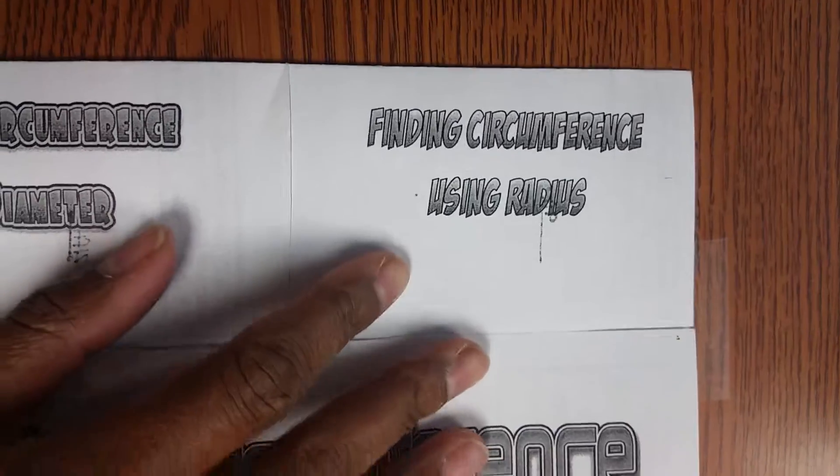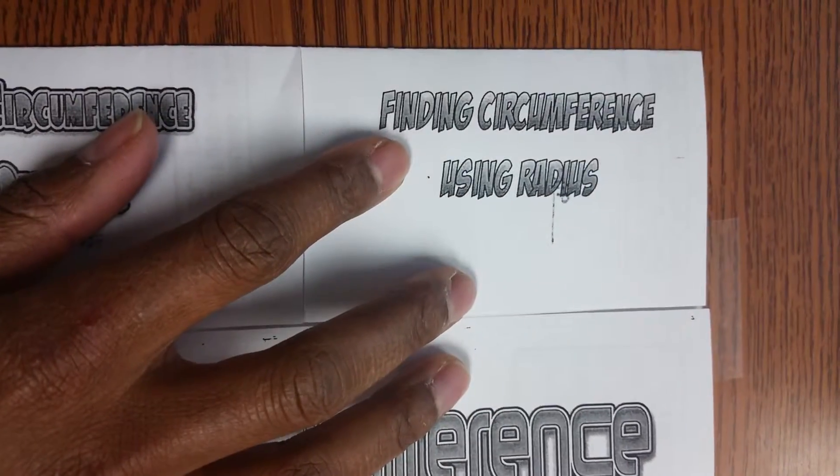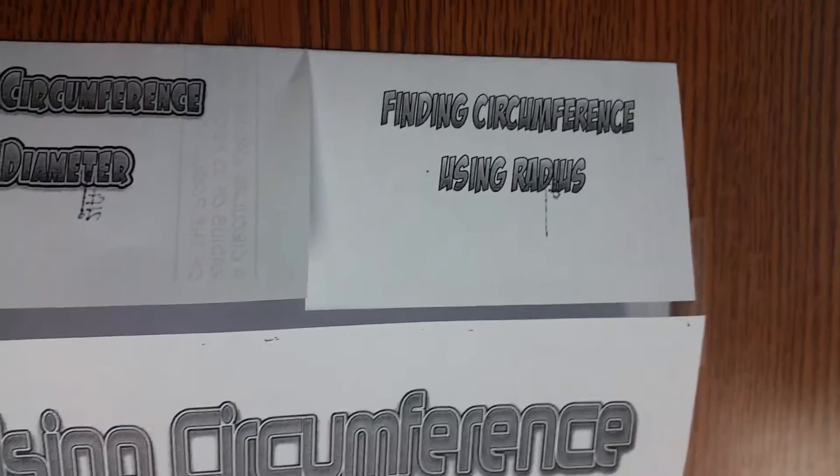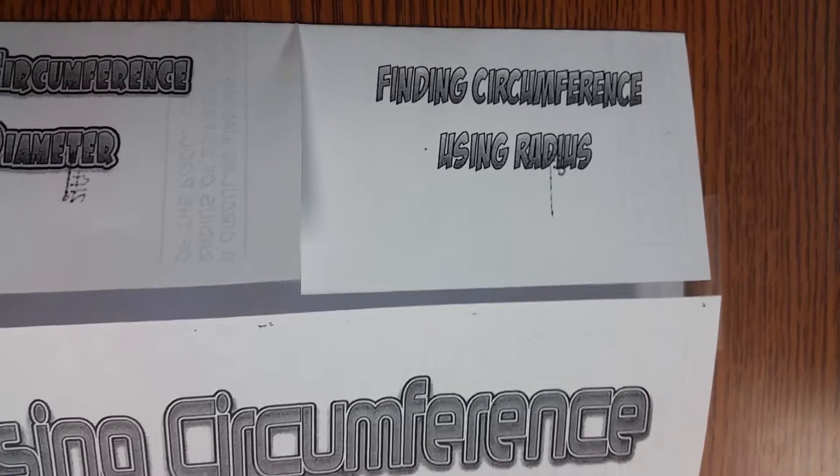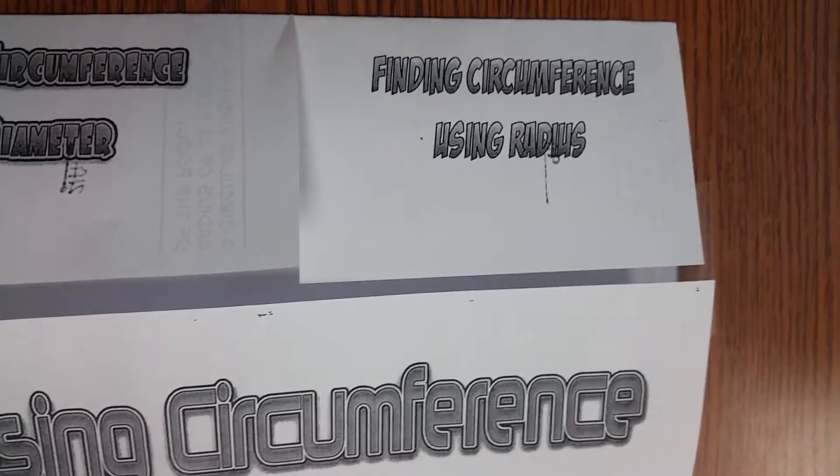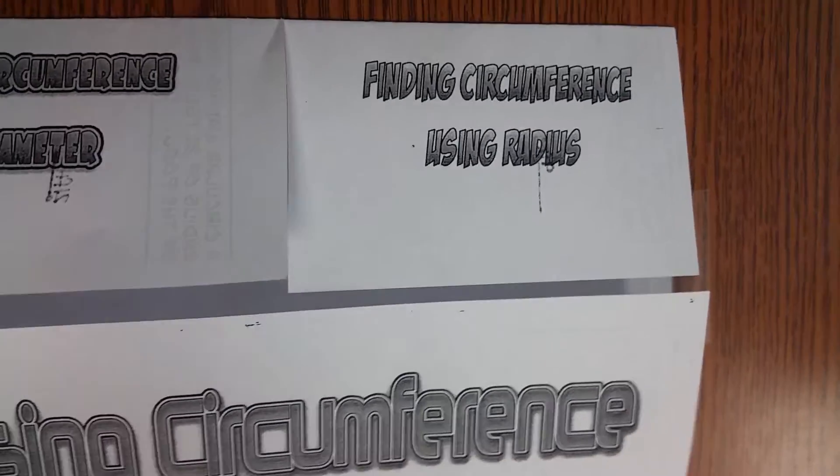Okay class, tomorrow we're going to be talking about finding circumference. Now we know circumference is just about a circle and finding the perimeter or the outside of that circle. So circumference, circle.